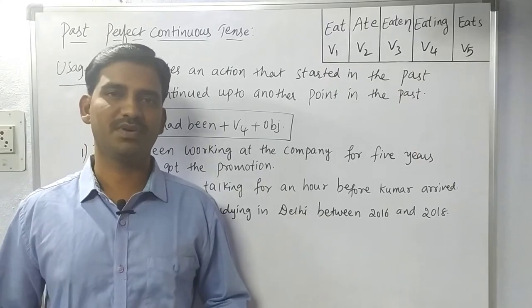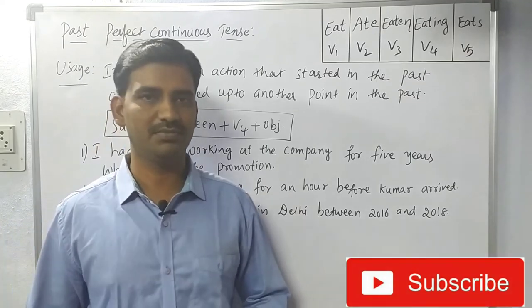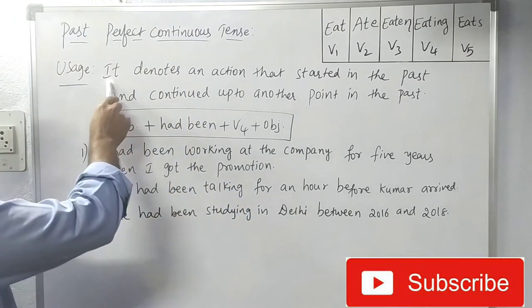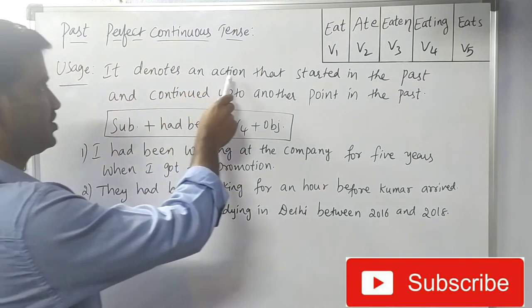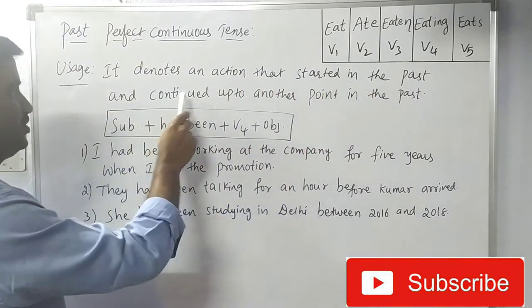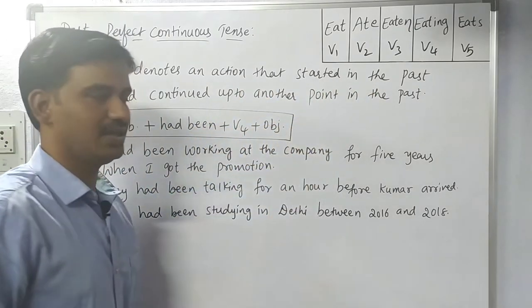Now we have Past Perfect Continuous Tense. So we have usage: it denotes an action that started in the past and continued up to another point in the past.